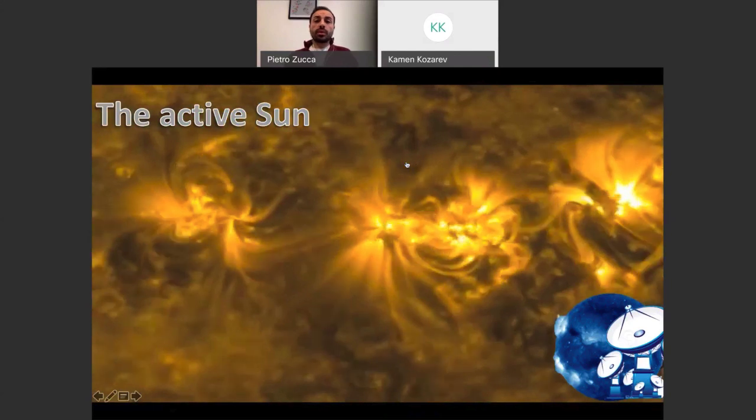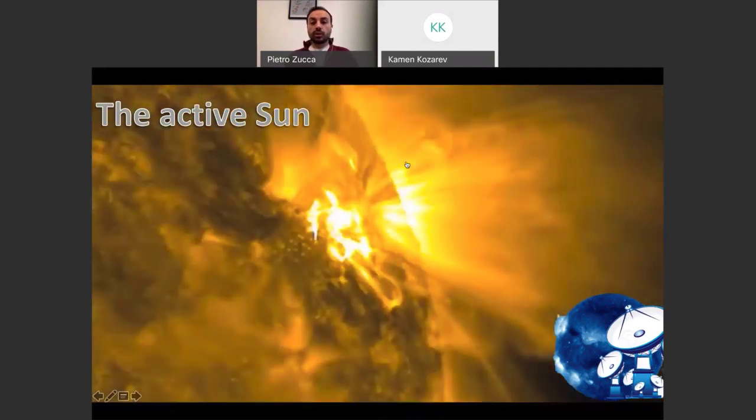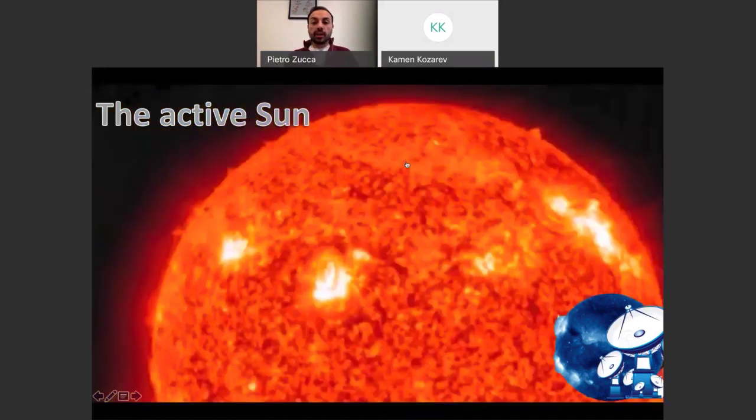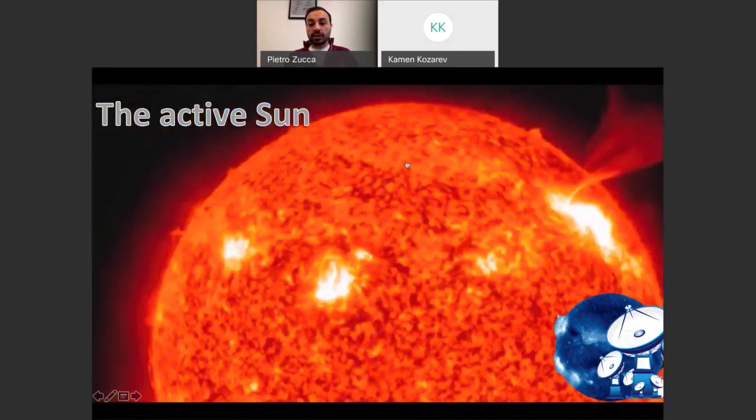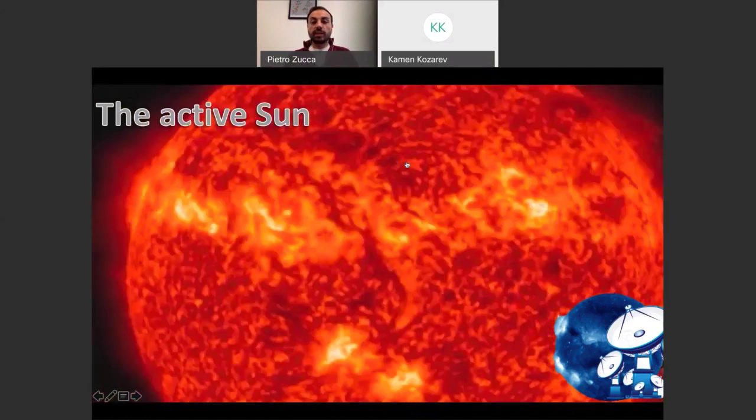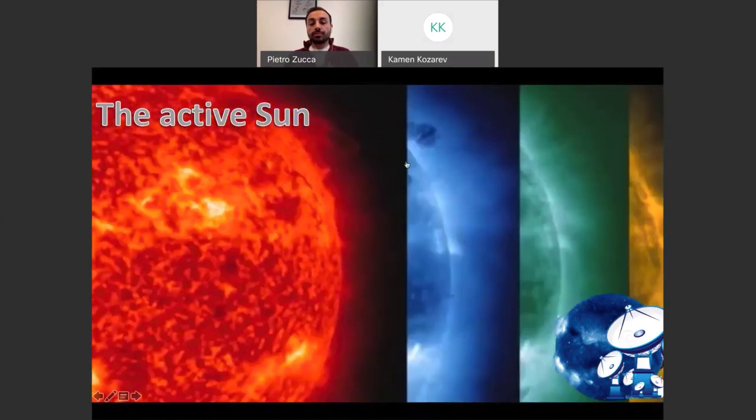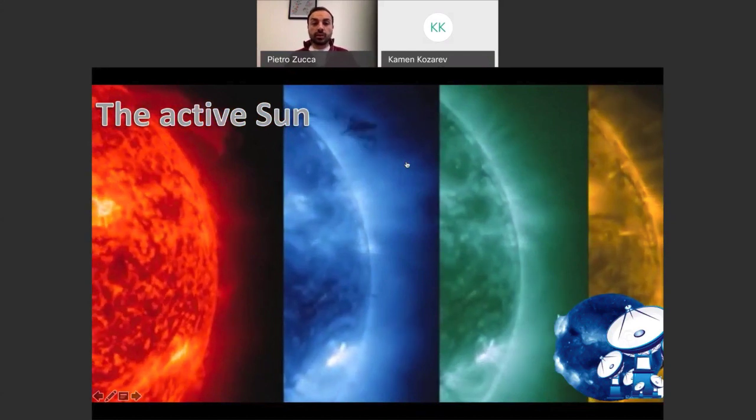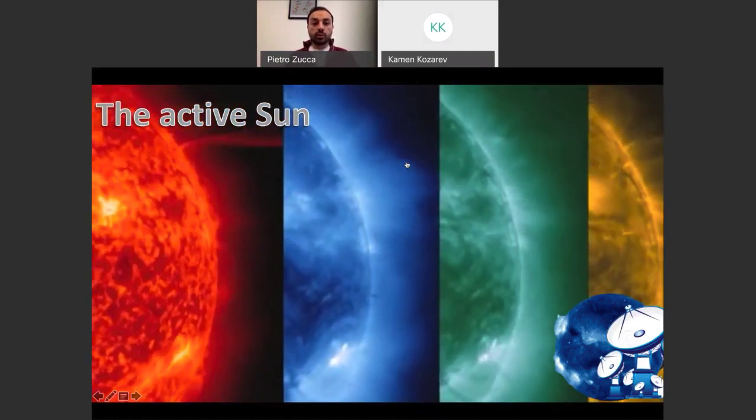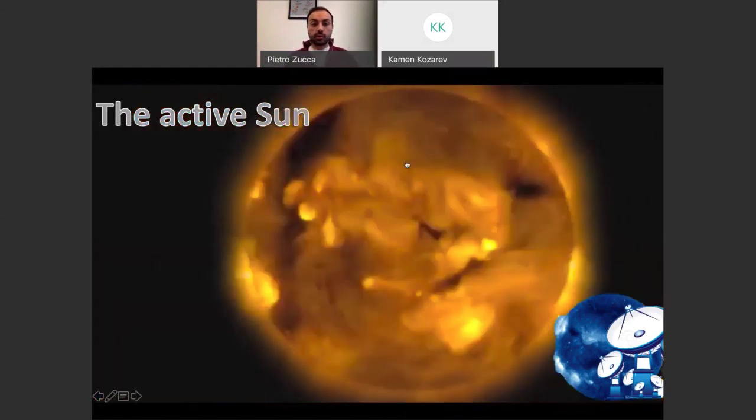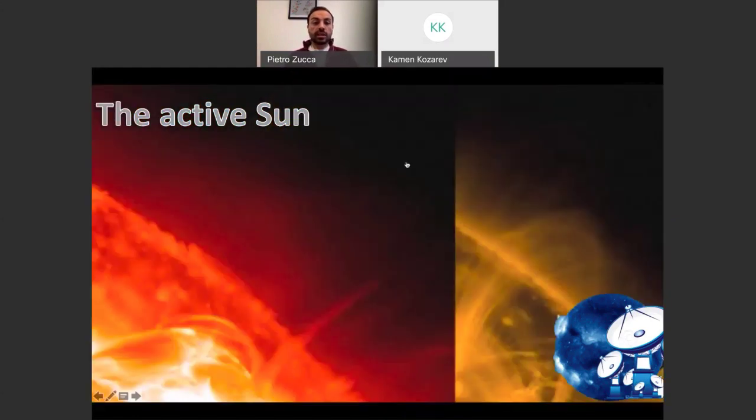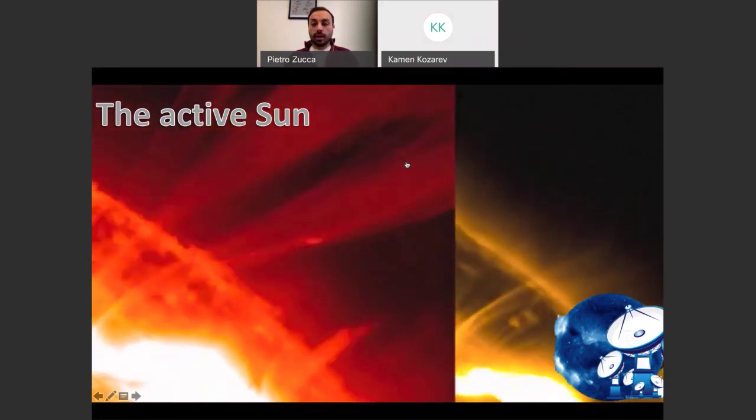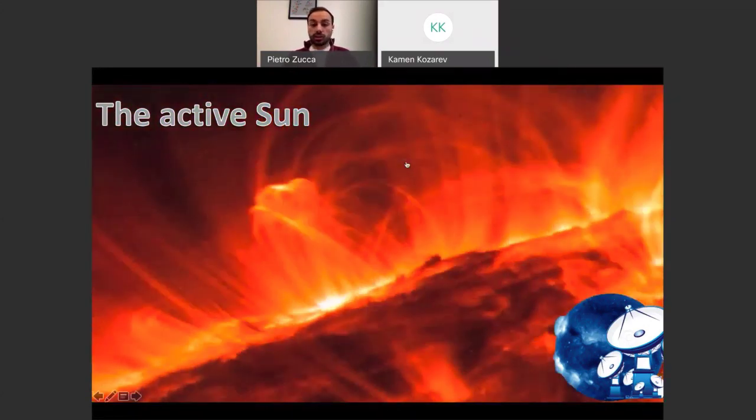With satellites we can observe the solar corona. These phenomena called solar flares are nothing more than explosions that happen in the surface of the sun and then develop into the solar atmosphere. With different filters, wavelengths, and instruments, we can observe different temperatures of the solar corona and understand the evolution of these eruptions that happen constantly.